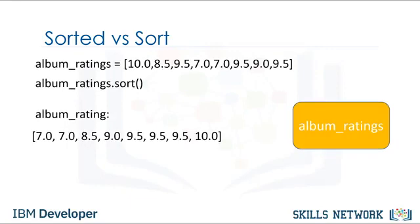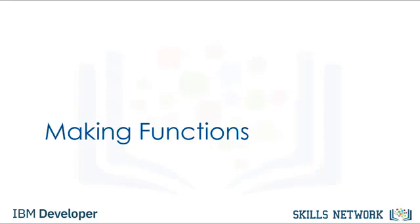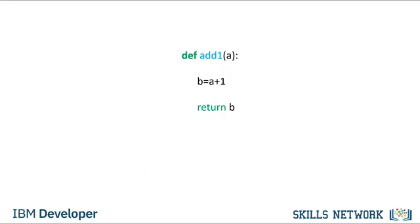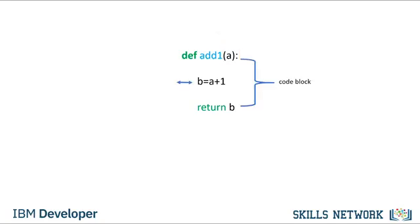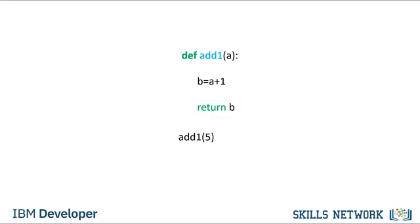Now let's see how to build our own functions. This is an example of a function in Python that returns its input value plus one. To define a function, we start with the keyword def. The name of the function should be descriptive of what it does. We have the function formal parameter a in parentheses, followed by a colon. We have a code block with an indent. We add 1 to a and assign it to b, then return the value of b. After we define the function, we can call it. The function will add 1 to 5 and return 6. We can call the function again and assign it to variable c — the value of c is 11.